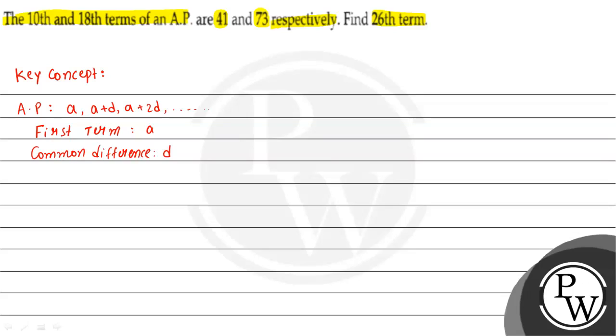If we find the nth term in this sequence, the nth term of AP is given by A_n equals a plus n minus 1 into d, where a is the first term, d is the common difference, and n is the term number. This is the concept we use to solve this question.